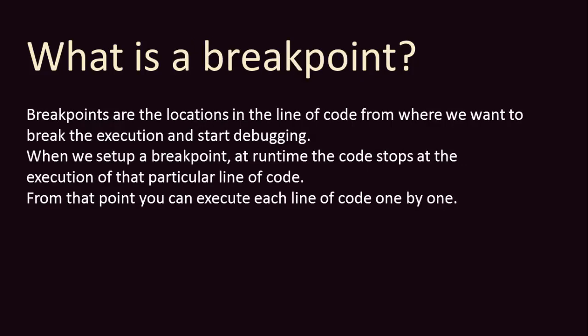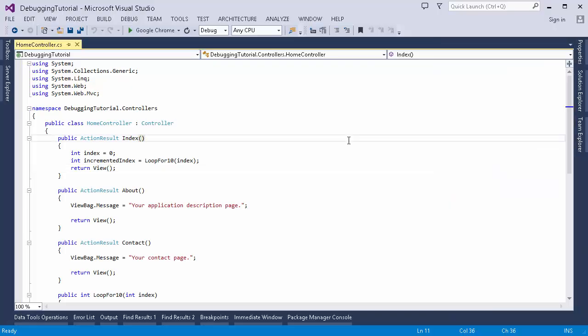To start off debugging, the very basic thing we need is a breakpoint. A breakpoint is nothing but just a line of code from which we want to break the execution and continue our debugging process. When we set up a breakpoint inside Visual Studio, at runtime whenever that particular line of code is executed, the execution breaks at that point. From there you can debug the code line by line, check what values are passed, what the variable values are, and what is going on in that function.